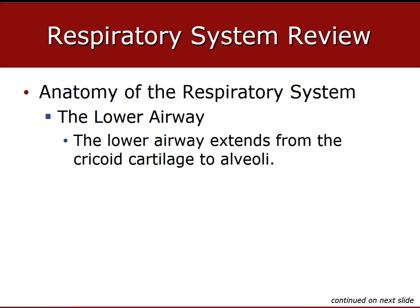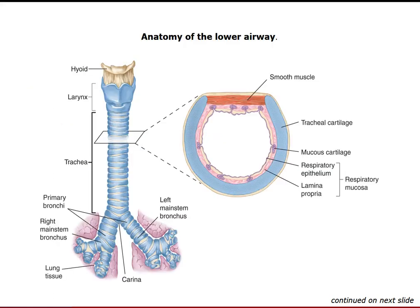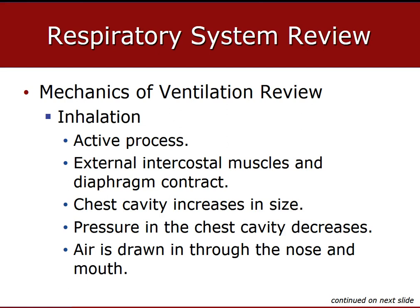The lower airway basically extends from the cricoid cartilage all the way down to the alveolar sacs in the lungs.